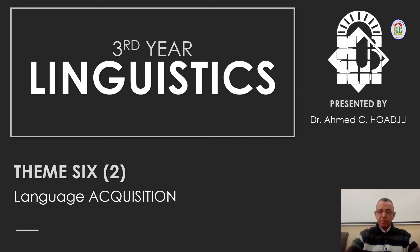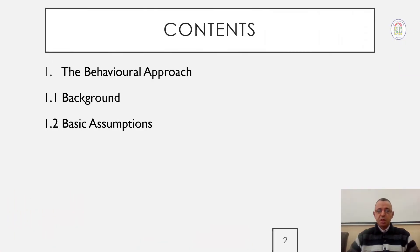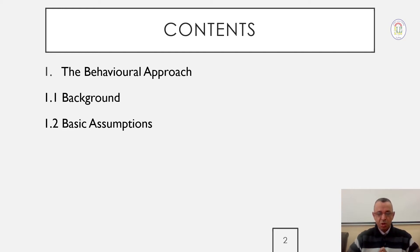In this second part of Theme 6 about language acquisition, we shall move to talk about one approach that explains the process of language acquisition — that is, the behavioral approach. In Theme 6 we will cover the two main approaches that try to explain how we humans come to acquire our first language: the behavioral approach on one hand, and the cognitive approach on the other.